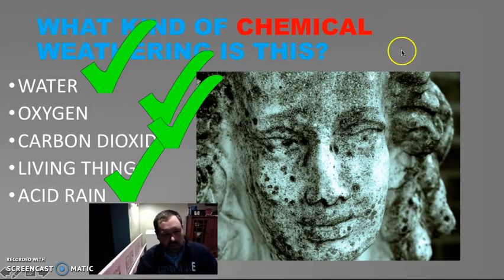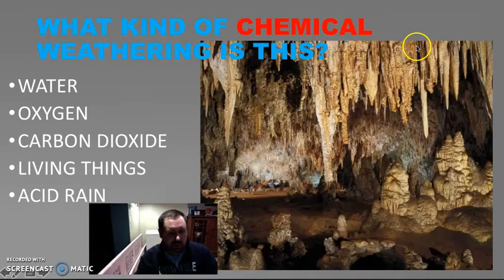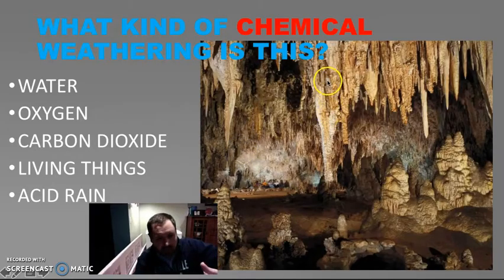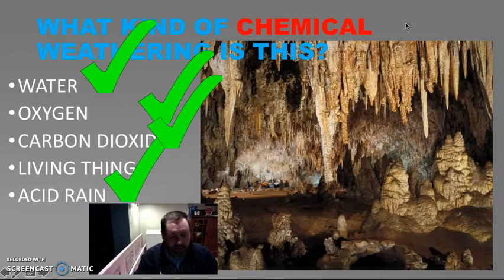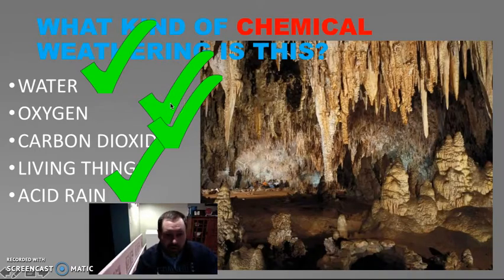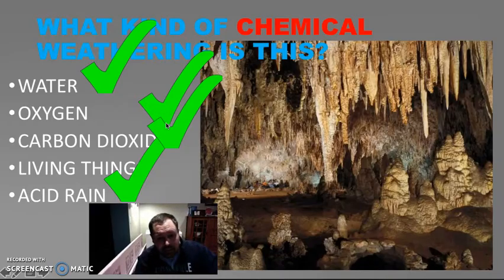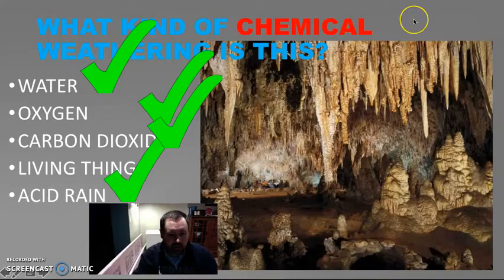What kind of chemical weathering is happening here? In this case, we've got the cave again, with some stalactites hanging down from the ceiling. What kind of chemical weathering is this? Kind of the same thing — things are working together. It's not just water, but water and oxygen and carbon dioxide in the water, which makes carbonic acid and slightly acidic rain. All those things together are causing the weathering in this cave, which makes some pretty cool-looking formations.